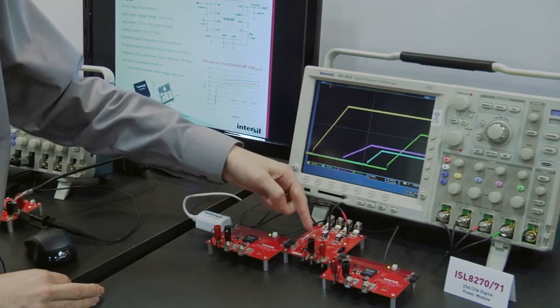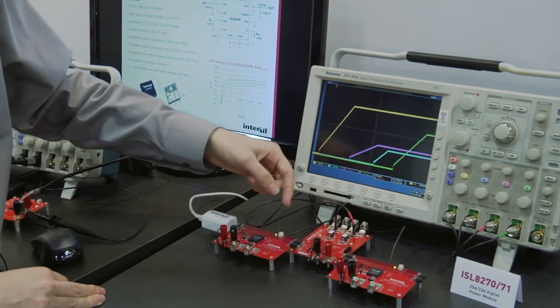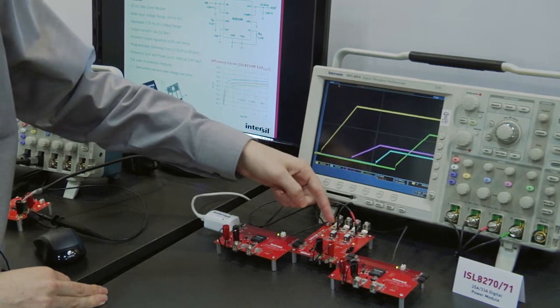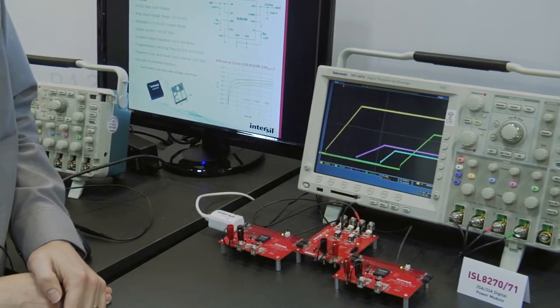In the middle here is the ZEO8800. This is the fourth-generation digital controller that powers these modules. This is set up as a demo board with two separate outputs, each one capable of up to 30 amps.